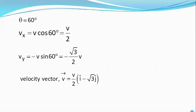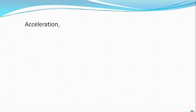And hence, the velocity vector is given by v vector equals v divided by 2 bracket i cap minus root 3 j cap. The force F vector acting on the particle at this moment of time will be given by F vector equals q times v vector cross B vector.